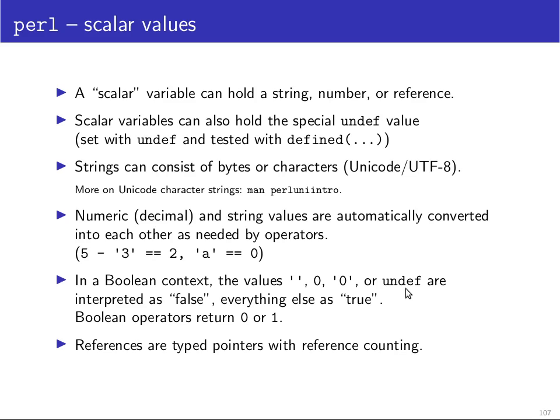And finally, scalar values can also be references. These are pointers that know what type of object they are pointing to. And these references point in Perl to objects that have reference counting. So whenever you overwrite all the references that may be stored in scalars to an object, then the object, the reference count of the object will drop to zero and the memory for the object will be deallocated automatically.